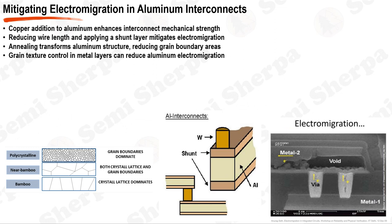Various strategies have been adopted to mitigate electromigration in aluminum interconnects. One strategy is the addition of copper to the aluminum — copper acts as a diffusion barrier, preventing aluminum atom motion under electron wind force, increasing electromigration resistance. Reducing the length of interconnect wires decreases the path length for electromigration. Additionally, the application of a shunt layer, typically composed of tungsten, W, or titanium nitride, TiN, provides an alternate current path, relieving electromigration stress on the aluminum.